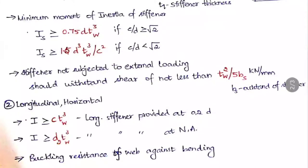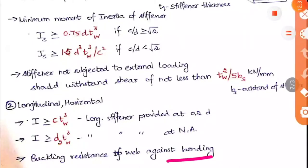For the longitudinal or horizontal stiffener, the moment of inertia should be greater than or equal to C·tw³ when the longitudinal stiffener is provided at 0.2 times D from the compression flange. When the longitudinal stiffener is provided along the neutral axis, it should be greater than D²·tw³. The key difference: the transverse stiffener provides buckling resistance against shear, while the longitudinal stiffener provides buckling resistance against bending.